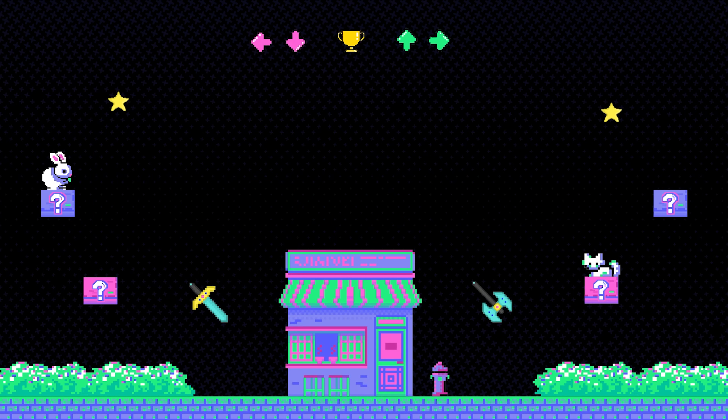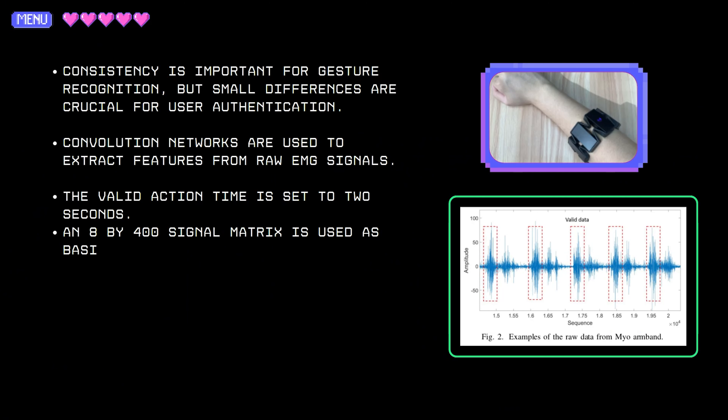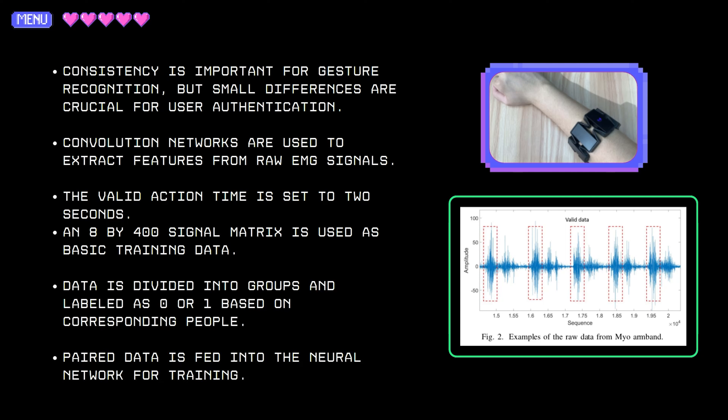Now let's look at data segmentation. In EMG applications like gesture recognition, the signal should be consistent when performed by different people, while in user authentication even small differences are important. EMG represents the structure of muscle and the amount of muscle contraction. The time from picking up the smartphone to watching the screen is generally no longer than 2 seconds. Since the Myo armband has 8 sensors and works at 200Hz, an 8×400 signal matrix is used as one piece of basic training data. The data is divided into groups according to corresponding people, and pairs are made with different people labelled as zero and the same person labelled as one. The paired data is then fed into the neural network for training.